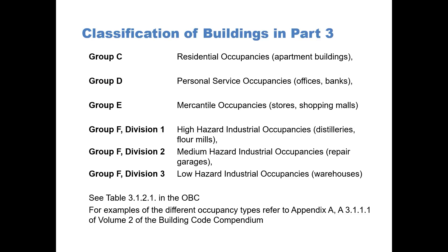Refer to Table 3.1.2.1 in the OBC for examples of the different occupancy types. Also refer to Appendix A, A3.1.1.1, of Volume II of the Building Code Compendium.